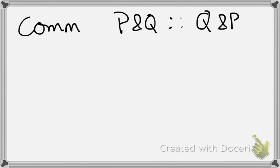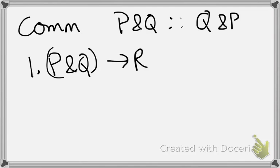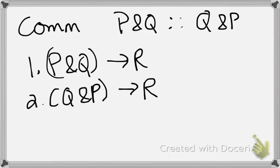So suppose I have the formula P and Q arrow R. And for some reason, I would like to have the formula Q and P arrow R. Well, I can have that by the rule of commutativity on line one.